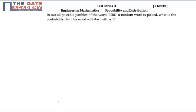So in the given problem, we're asking the probability that the word starts with B in the word BIRD. First of all, how many possible number of words can be formed by using BIRD?